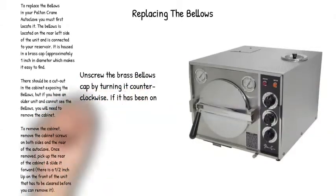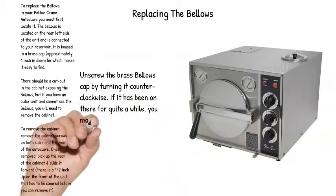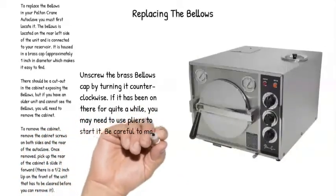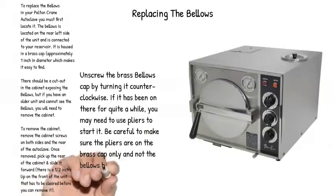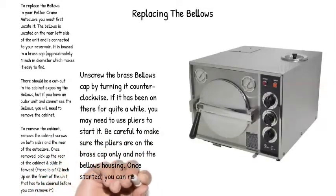Unscrew the brass bellows cap by turning it counterclockwise. If it has been on there for quite a while, you may need to use pliers to start it. Be careful to make sure the pliers are on the brass cap only and not the bellows housing. Once started, you can remove it the rest of the way by hand.